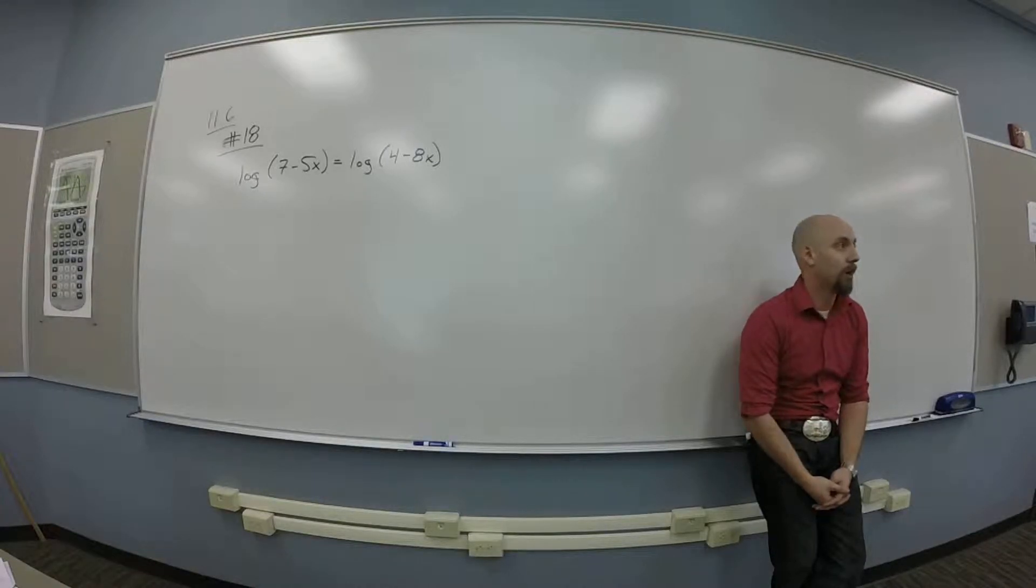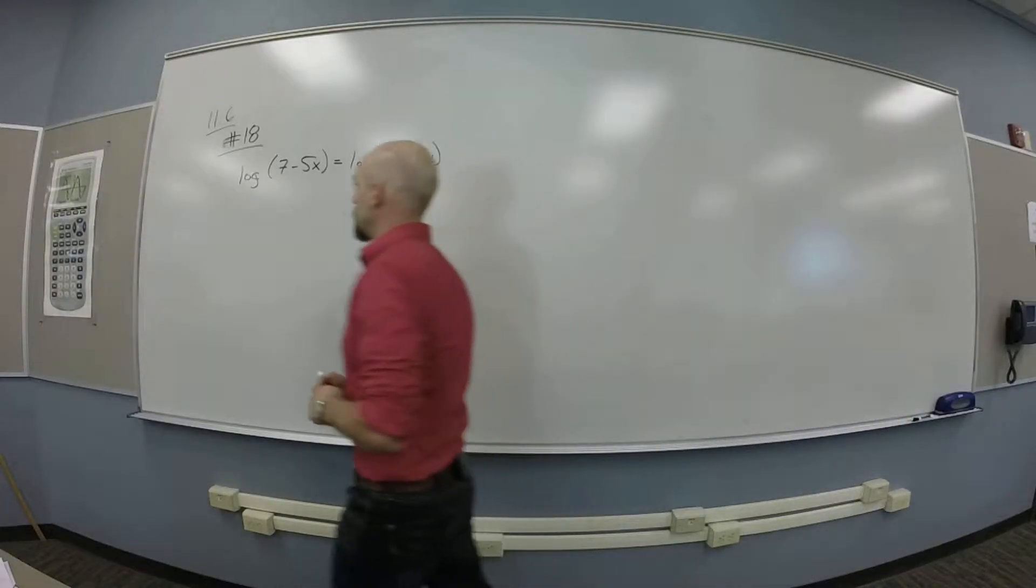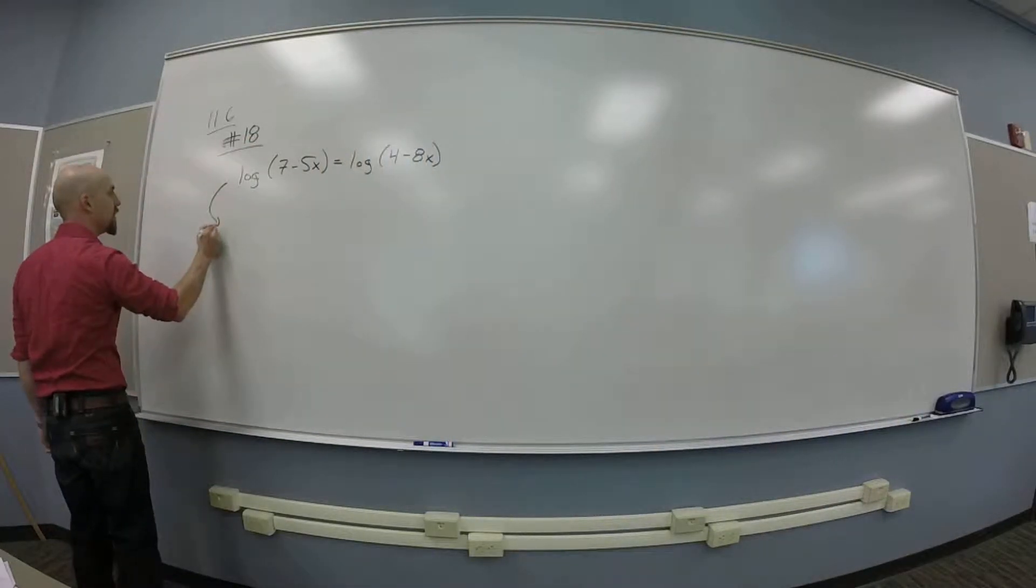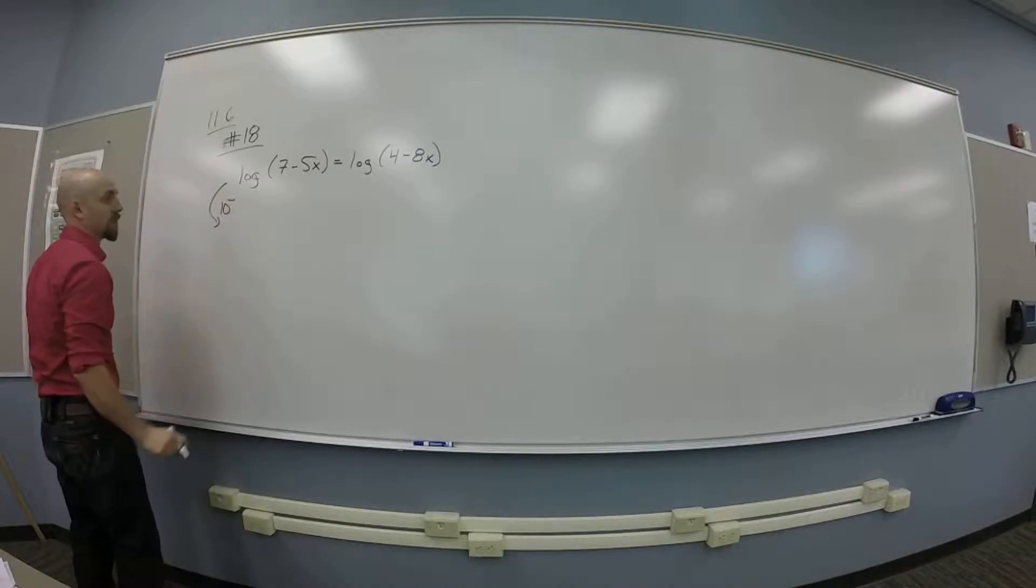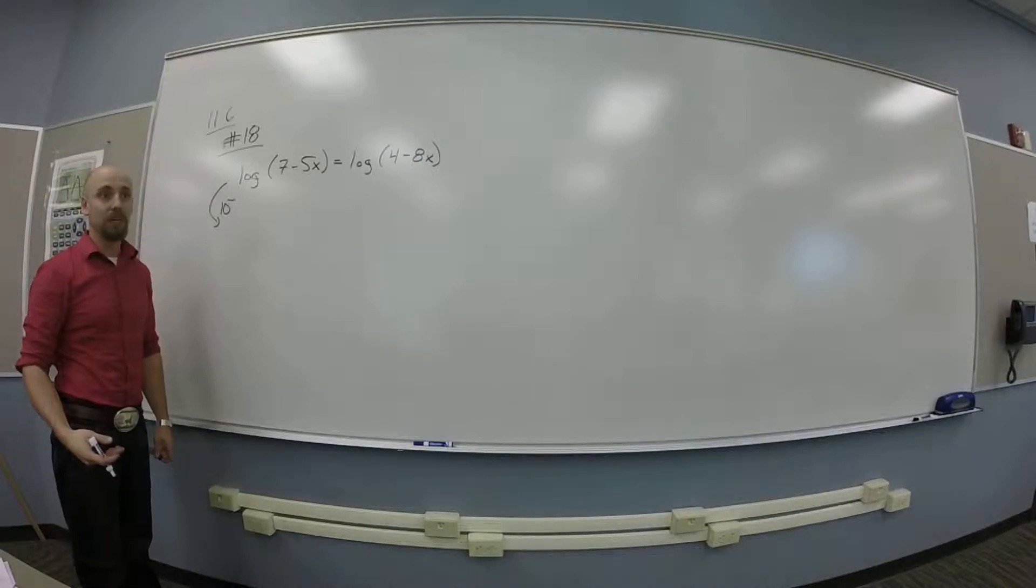So what's my thought going to be? I want to get rid of the logs, so what do I do to both sides? I put them in the exponent of a 10, right? Why a 10? Because it's the log base when it's not specified. Because log without a base is base 10.